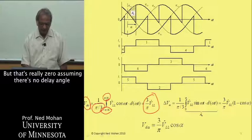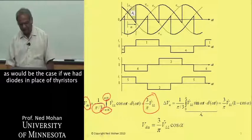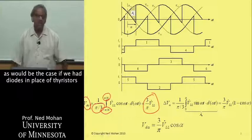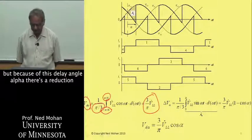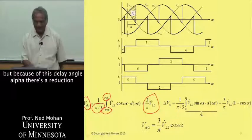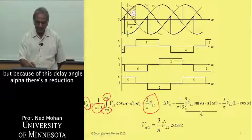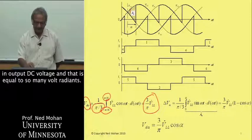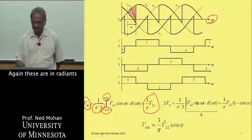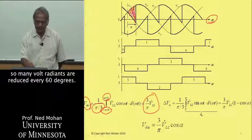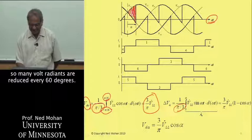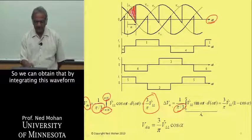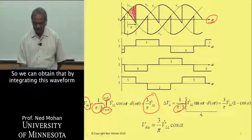Assuming that there is no delay angle, as would be the case if we had diodes in place of thyristors. But because of this delay angle alpha, there is a reduction in output DC voltage, and that is equal to so many volt radians. These are in radians.